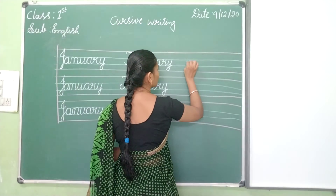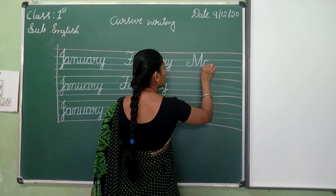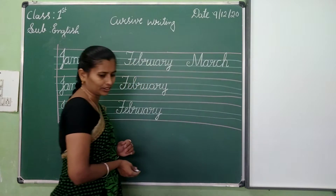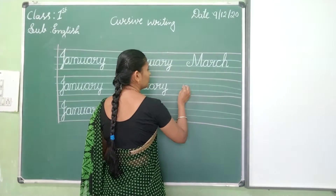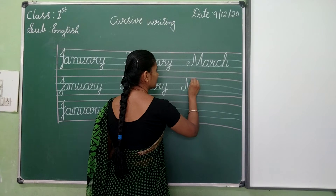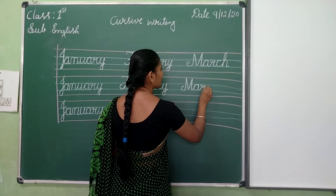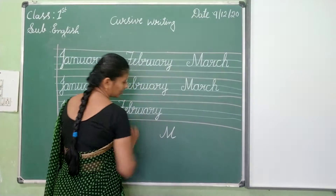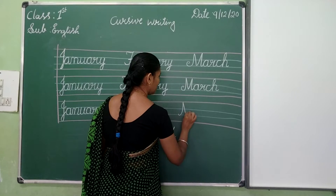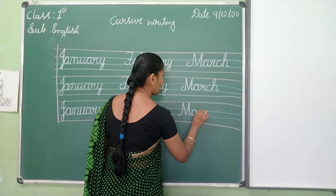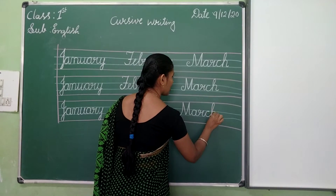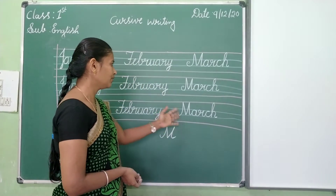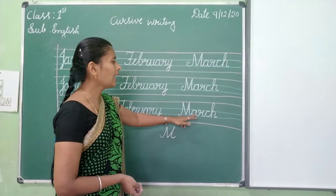March. M, A, R, C, H. March. Okay? You can write like this. M, A, R, C, H. March. M, A, R, C, H. March. You can write M like this also. Which one is easy for you, you can write M. M, A, R, C, H. March.